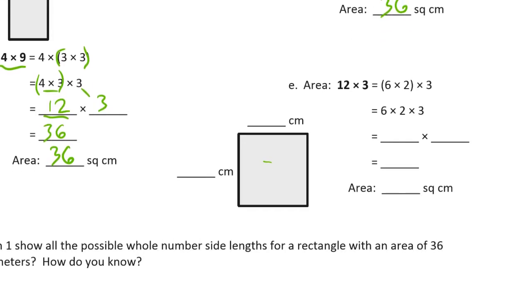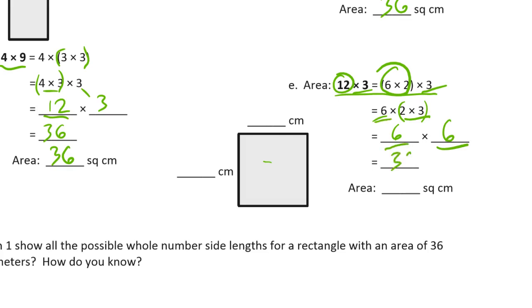Now looking at this one: 12 times 3 equals (6 times 2) times 3. If we look at the 12 as 6 times 2, and change the parentheses to be around the 2 times 3 instead of the 6 times 2, we get 6 times (2 times 3), which is 6 times 6. 6 times 6 is 36 square centimeters. It makes sense that this looks like a square because it has equal sides.